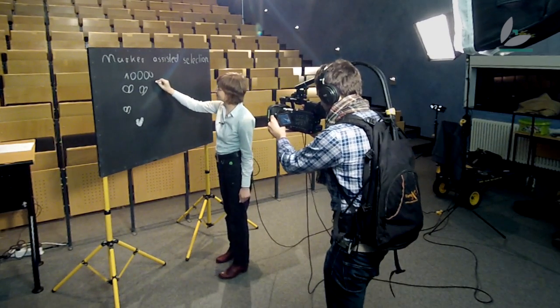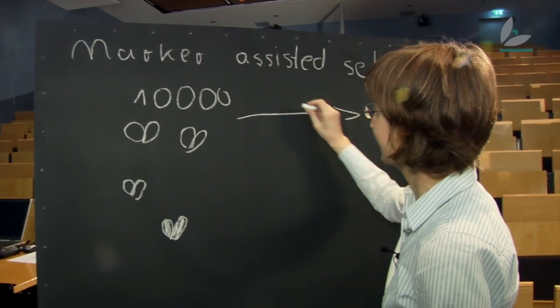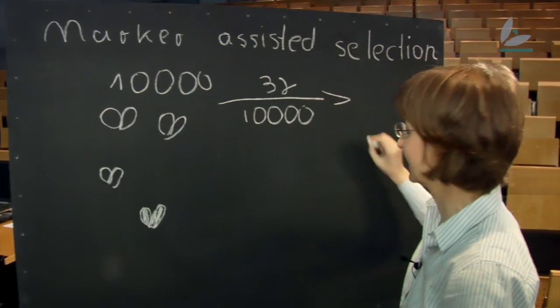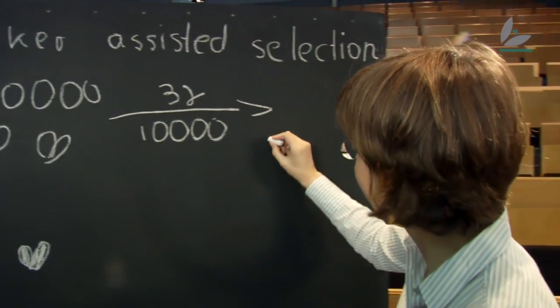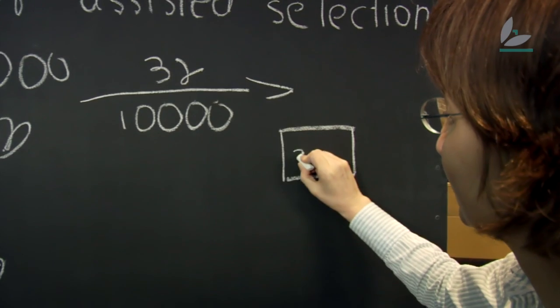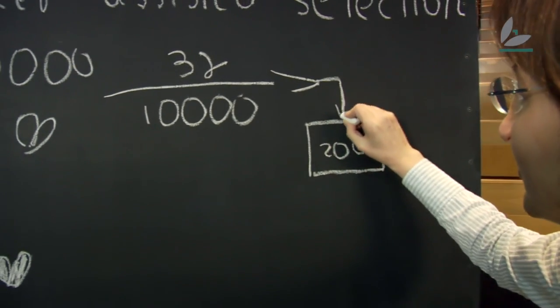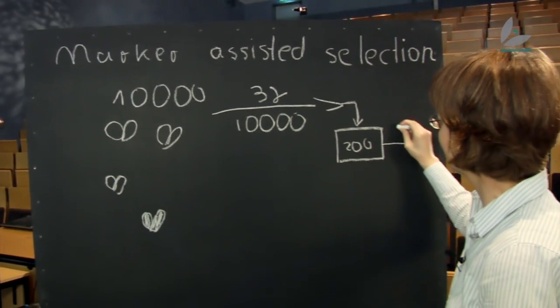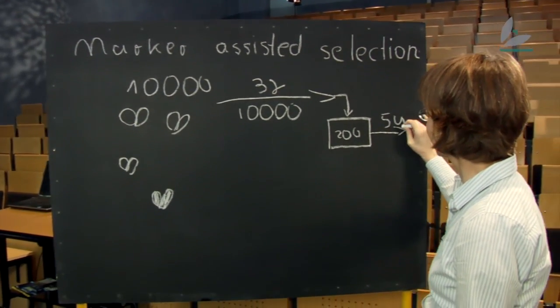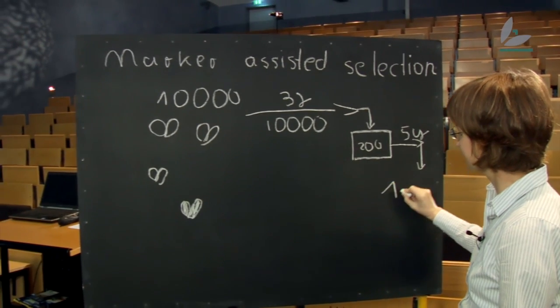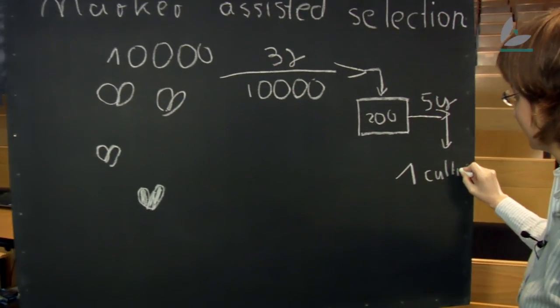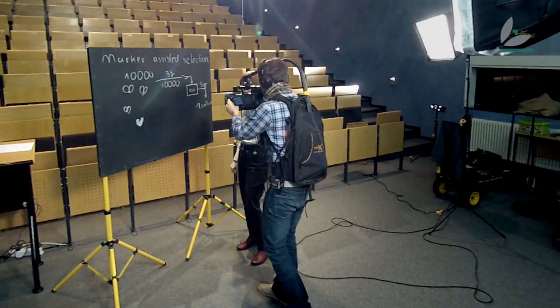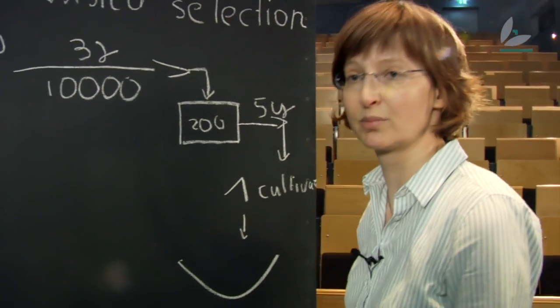Classically, we would need to look at all these 10,000 plants for about three years to find those 200 plants which are best. And these 200 plants are then checked in more detailed experiments for about five years. And at the end of the process we will have one cultivar, and this one cultivar will be used by the farmers and will basically end up on your plate.